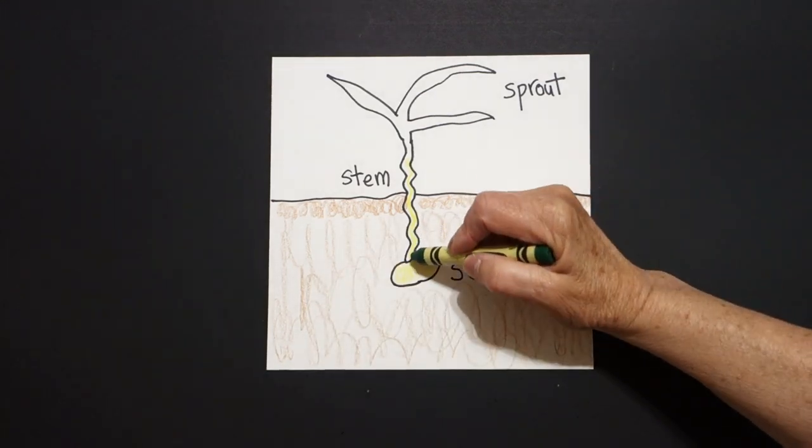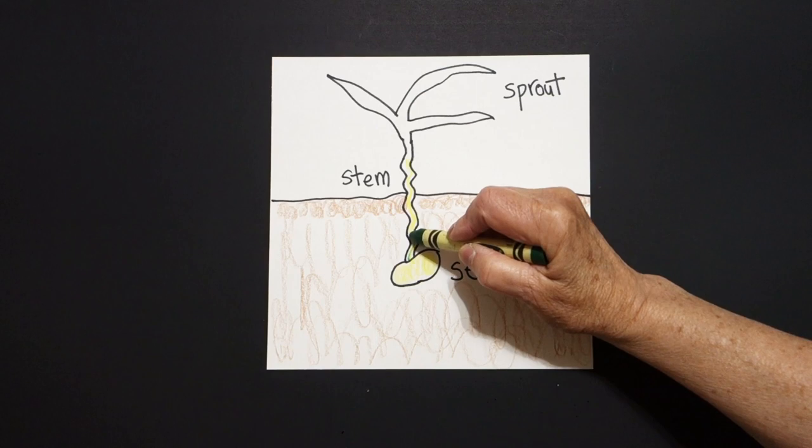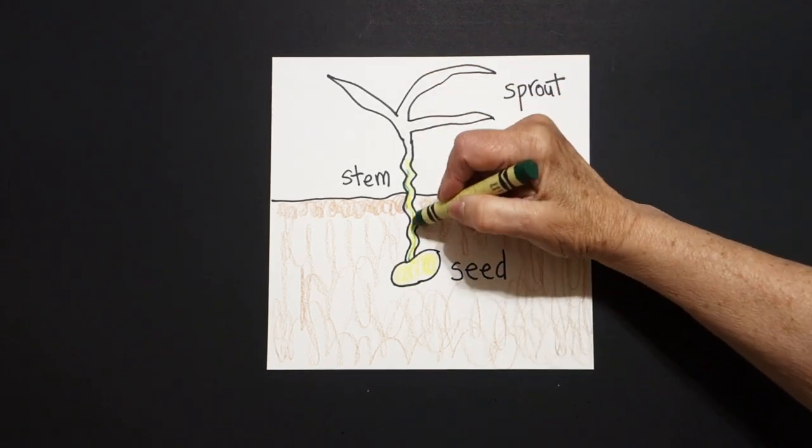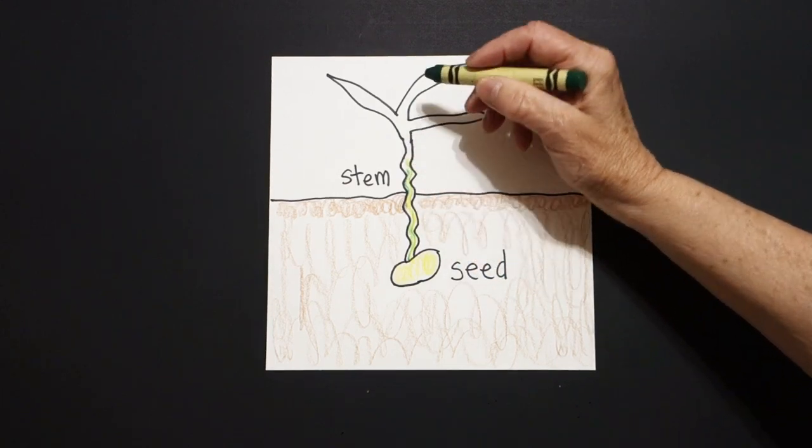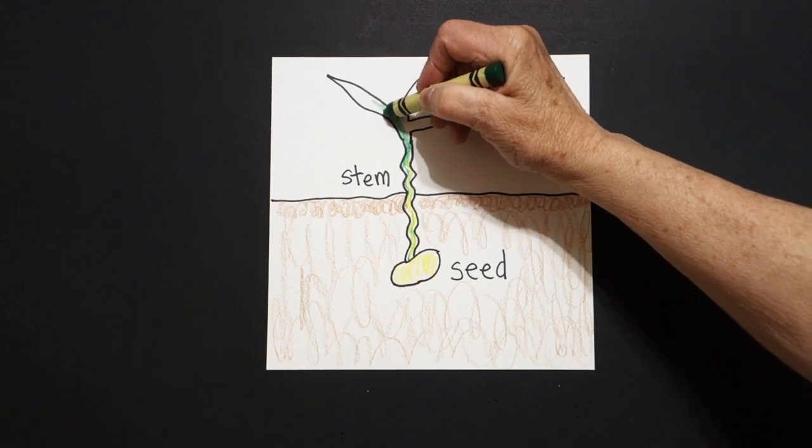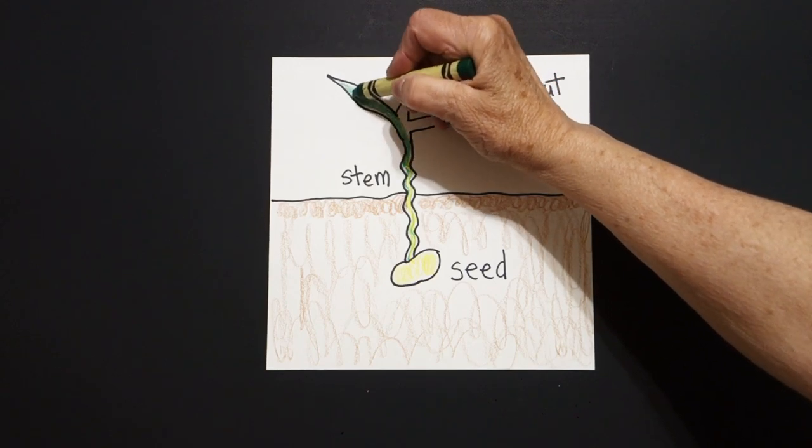Then because the seed is starting to become a stem, I'm going to take my green and I'm going to go over the yellow. And once I hit above ground, I'm going to make this part green.